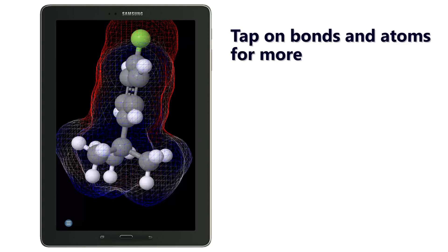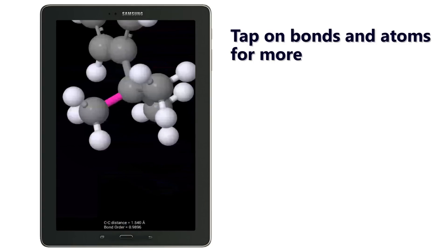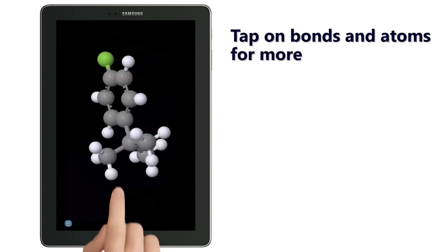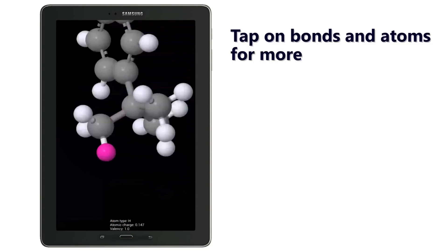You can use two finger press to zoom in and out. Tap on bond to view its bond length and bond order. Tap again on a selected bond to deselect it. Tap on an atom to view its properties such as partial charge and valency.